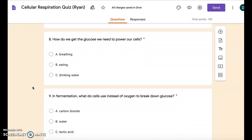Number eight: How do we get the glucose we need to power our cells? A: breathing. B: eating. C: drinking water.